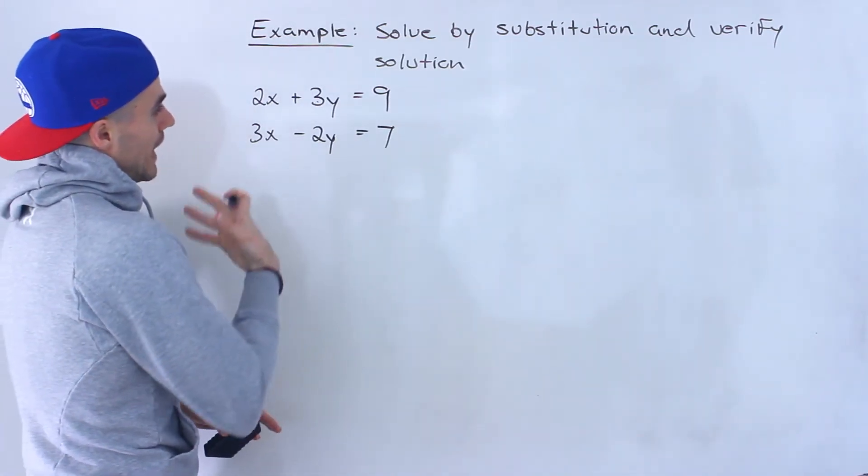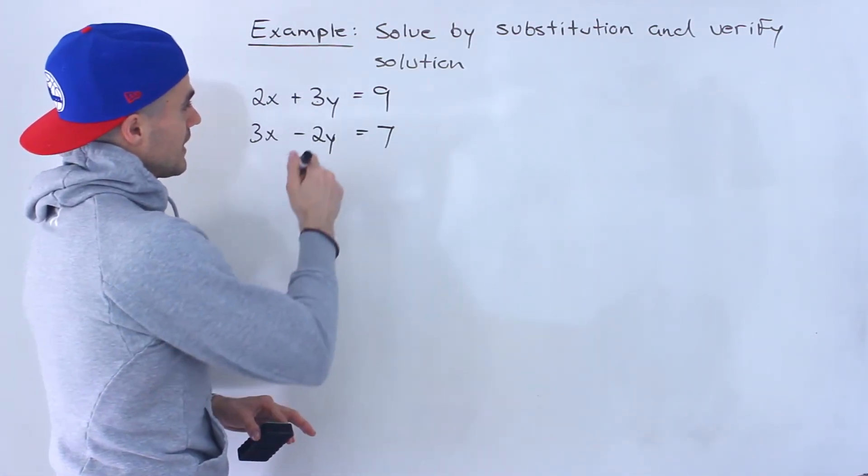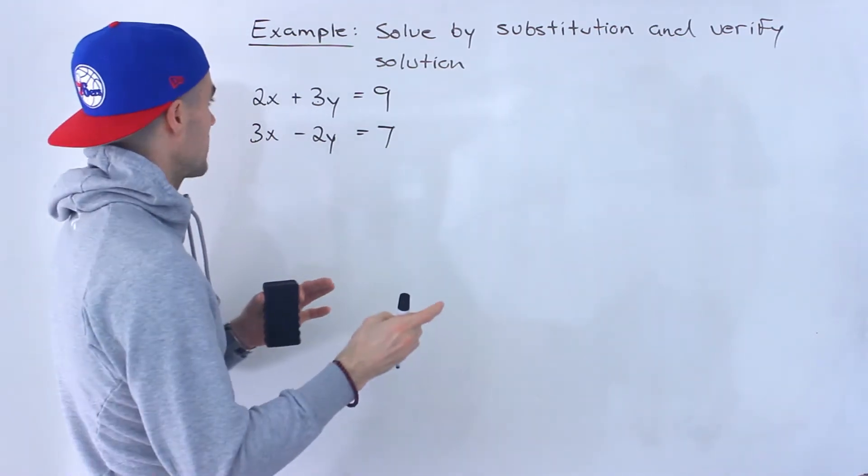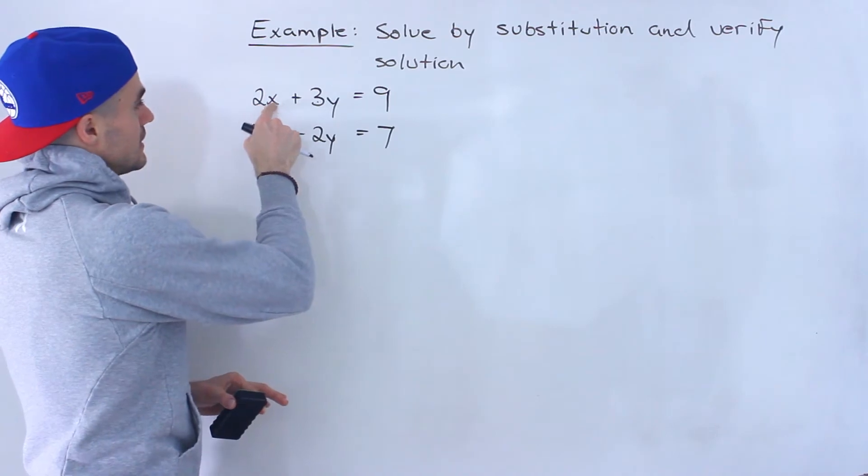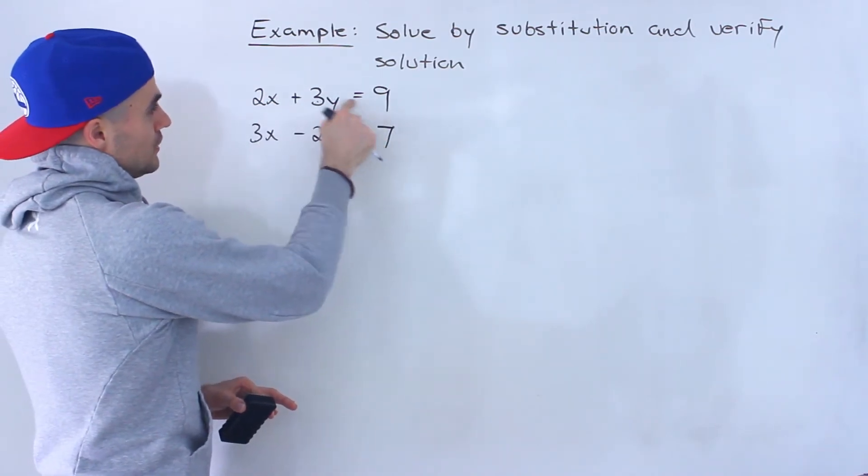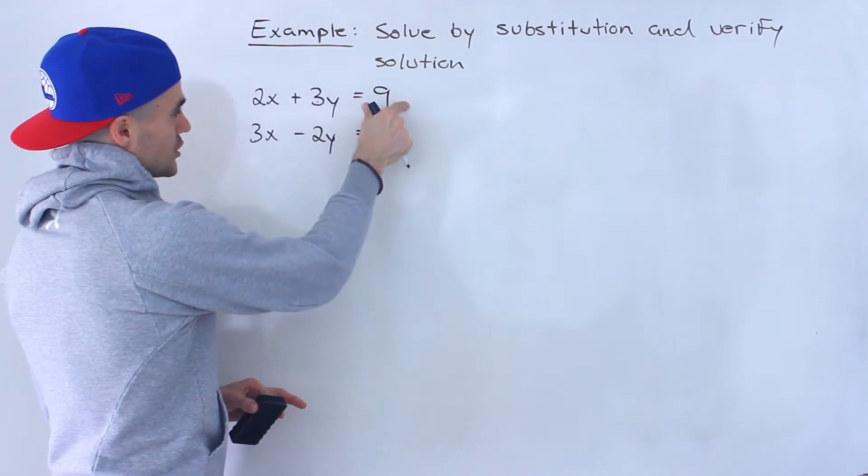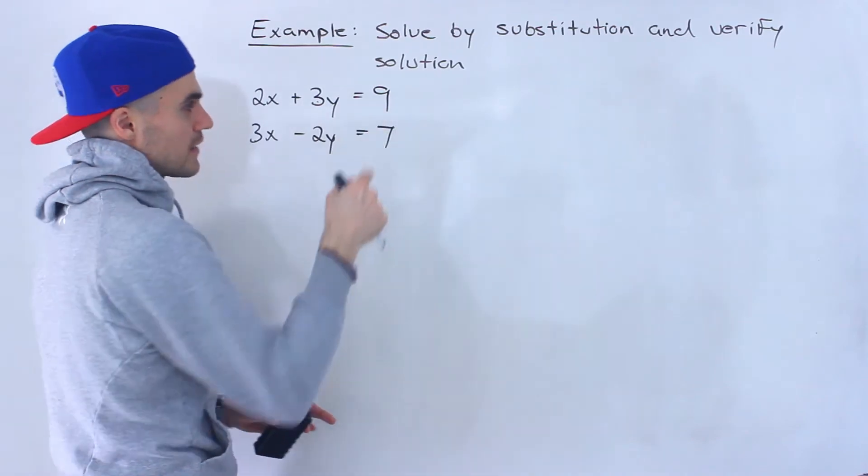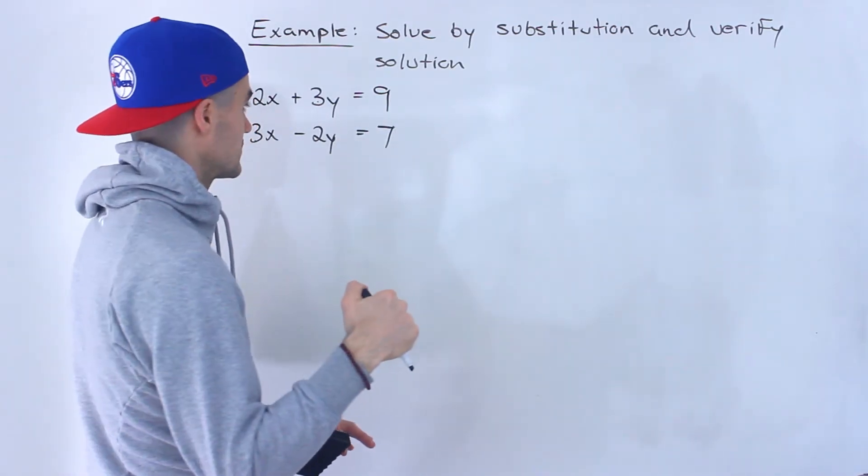However, what I personally like to look for is when I isolate having the least amount of fractions as possible. So notice if I take, if I isolate for this x here and divide everything by 2, notice we'll have a fraction here, we'll have a fraction here. But notice if I divide everything by 3, we'll have a fraction here, but then 9 divided by 3, that smoothly divides into 3.